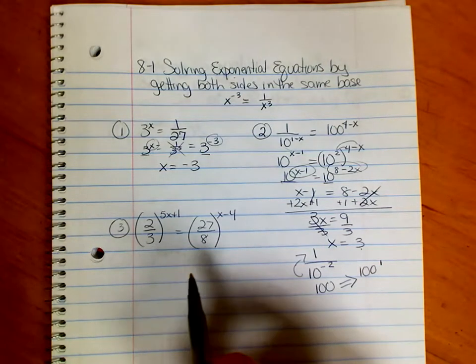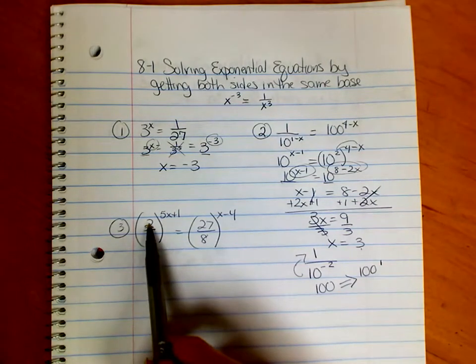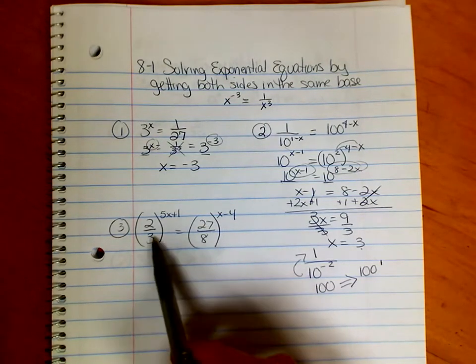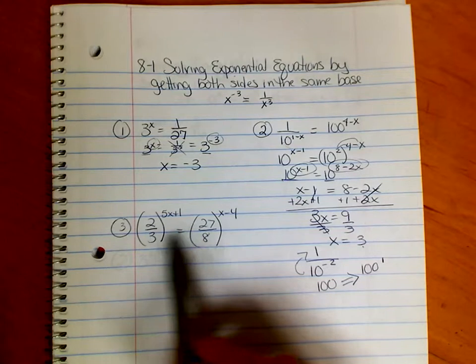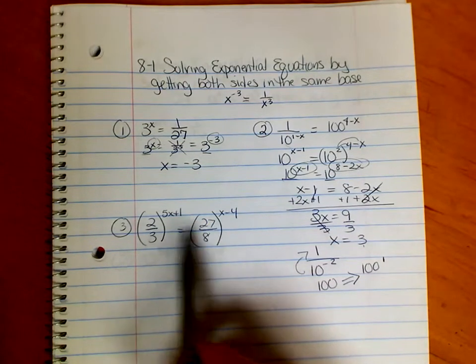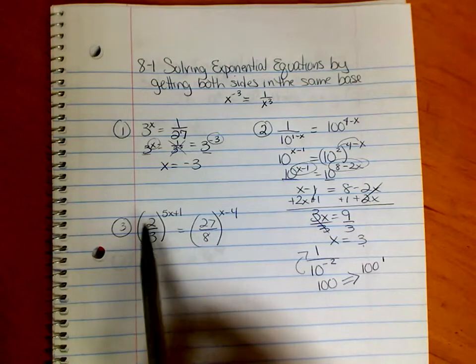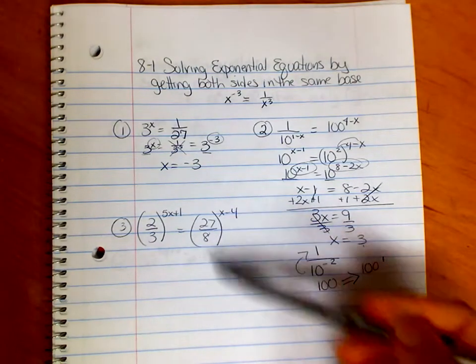Okay, this one looks a little tricky, but you'll notice there's a 2 here and a 3 here. And then you have a 27 and an 8. And you'll see that 3 kind of goes with 27, because 27 is 3 cubed. And 8 and 2 kind of go together, because 8 is 2 cubed. So we've got to flip it over.